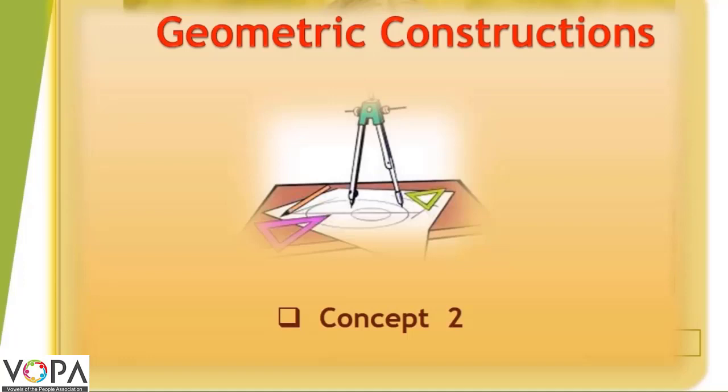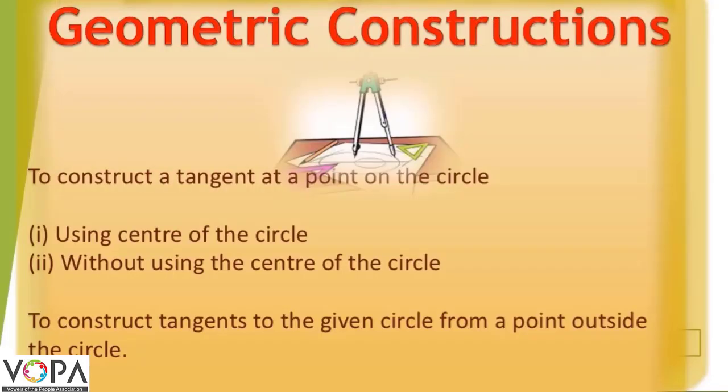The second concept in geometric construction is the representation of circle and its tangent. In this concept, there is a representation of circle with its tangent. When we want to draw the tangent at a point for the given circles, we use two different methods.